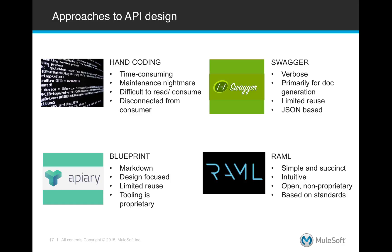Now there is a fourth option to API design: RAML, RESTful API Modeling Language. We'll talk more about RAML soon, but basically it's a much simpler and cleaner way to design APIs. It's quite intuitive and is open, non-proprietary, so you can actually go on to GitHub and see the RAML specification and different things in the RAML project, and it's based on some very familiar standards.